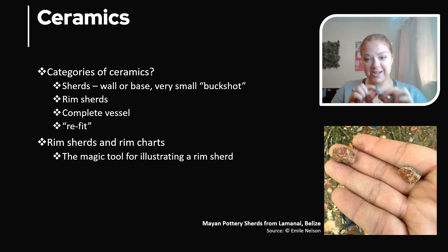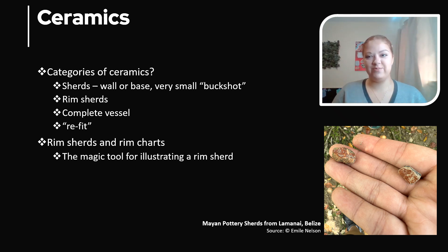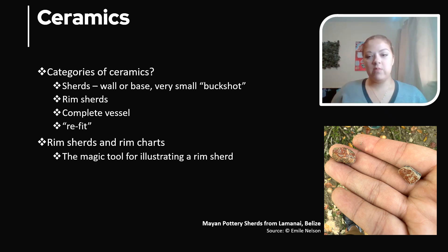I have seen very tiny pieces of rim attached to very large body sherds, and I have seen very thick rim sherds where it's almost just a rim and it kind of looks like a weird rock instead of a rim sherd. So we also have complete vessels. And then while not really a category of sherd, we have what are called refits when you're collecting and sorting through pottery, which is when you have several pieces probably found in the same area together that can be fitted correctly back together by someone who does that.